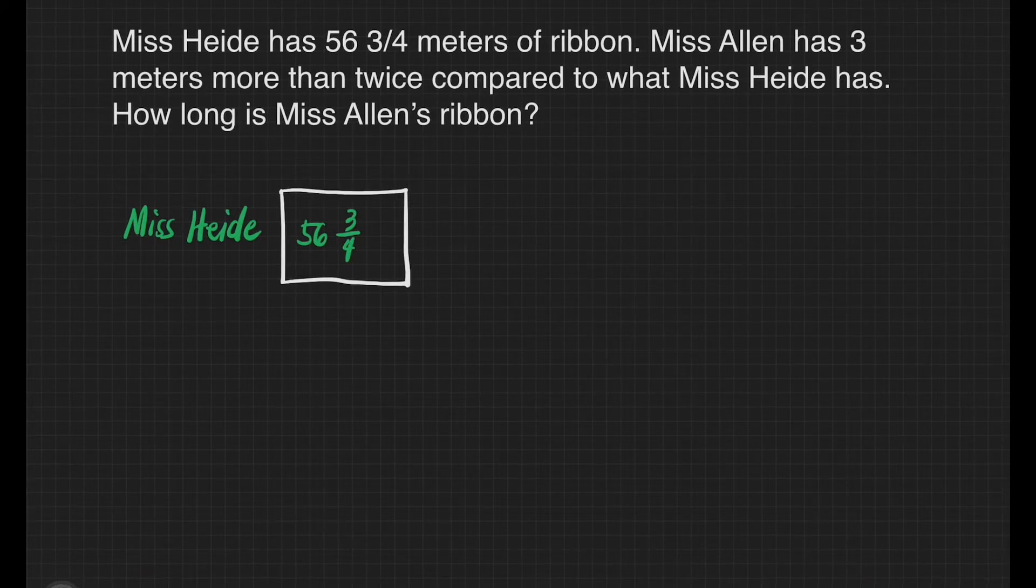Next, we'll have for Ms. Allen. Remember that she has 3 meters more than twice compared to what Ms. Heidi has. What do you mean by twice? It means we have to draw 2 boxes that has 56 and 3/4 in each box.